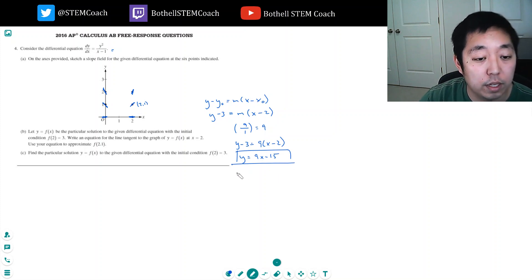And then I want to approximate f(2.1) is equal to 9 times 2.1 minus 15. And that's no calculator. That's 18.9 minus 15. That's equal to 3.9.